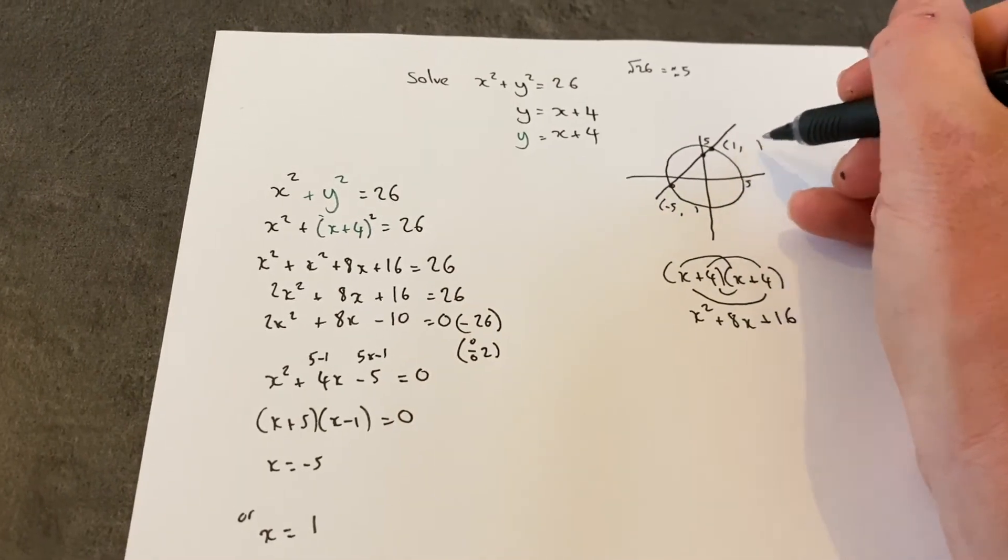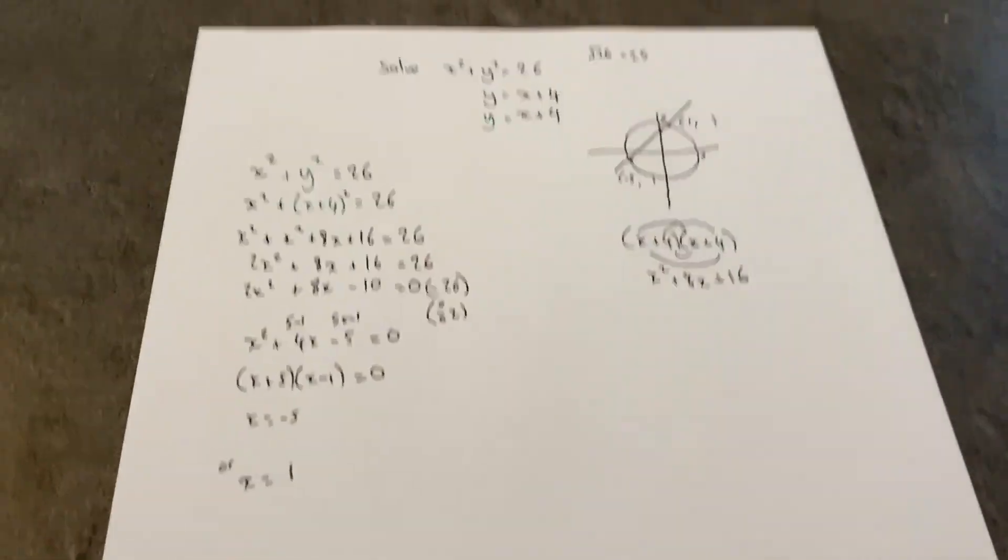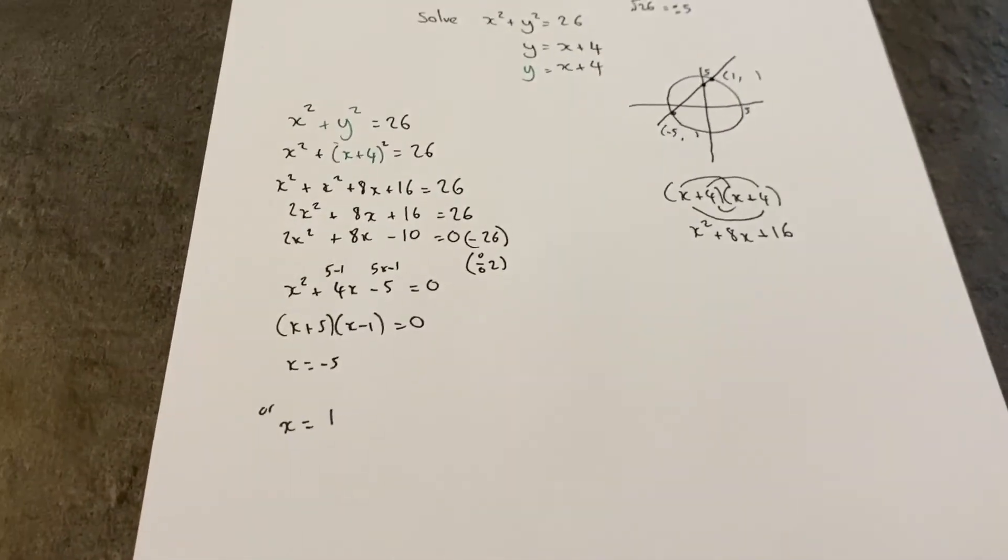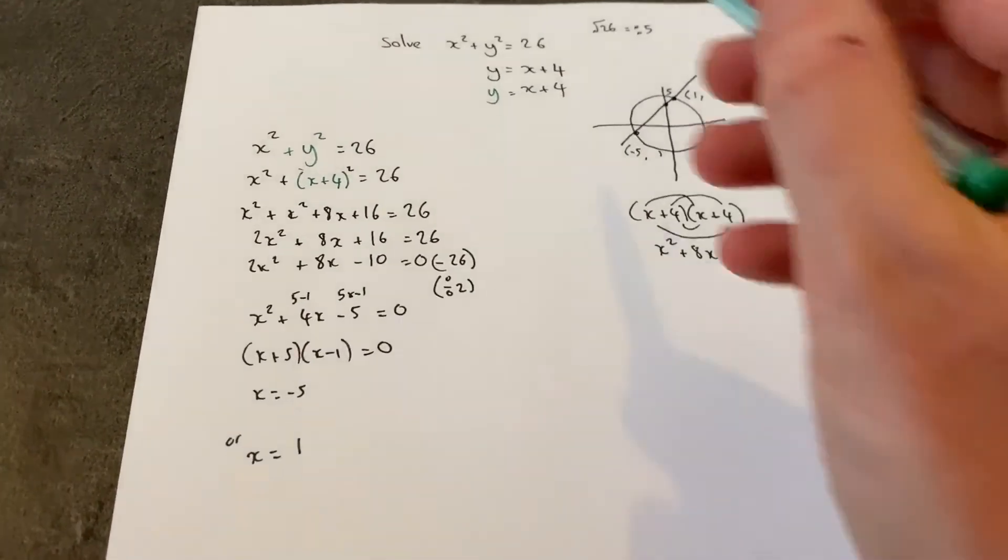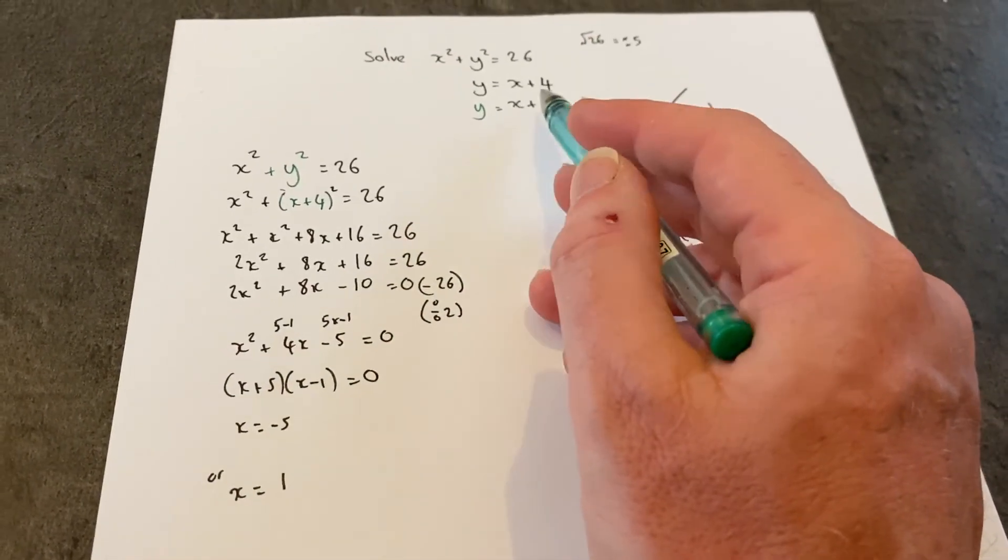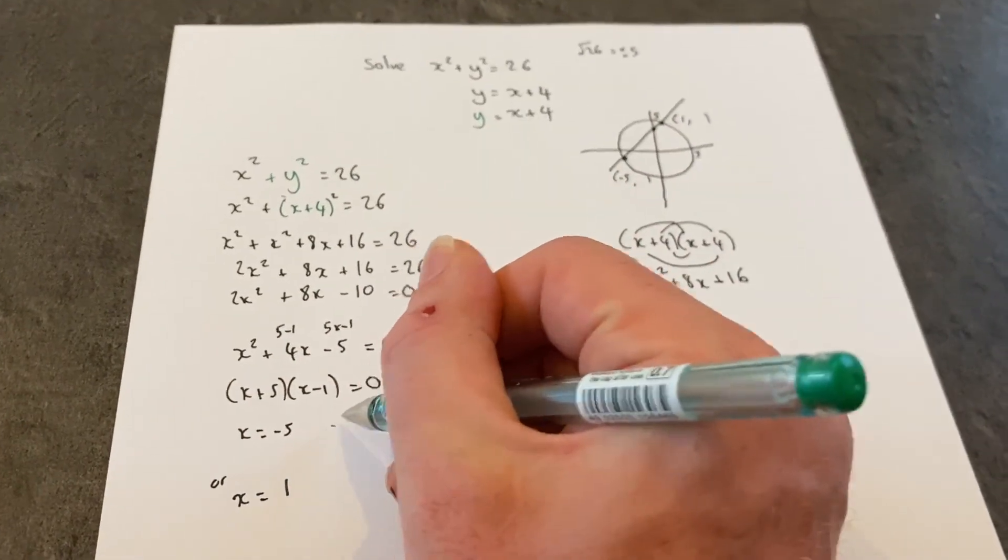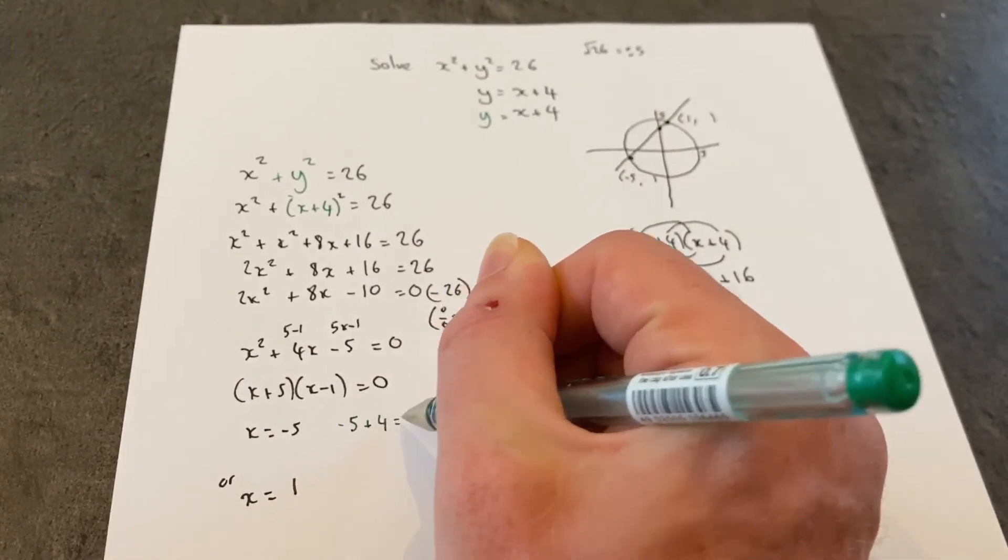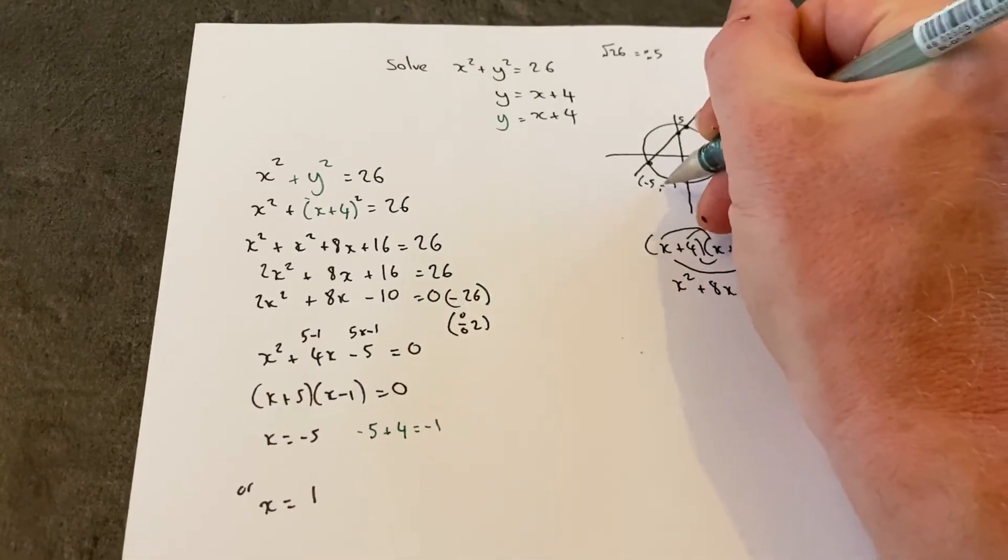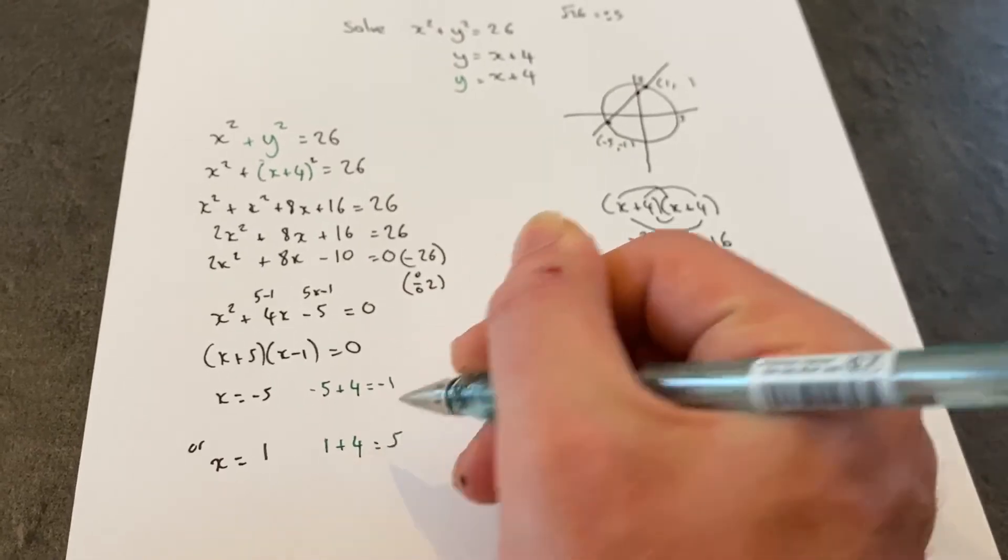To finish off the question, I've just got to find the two y coordinates. To do this, I revert back to the simplest equation possible, which was y equals x add 4. To find y, I just add 4 to the x value. When x is minus 5, minus 5 plus 4 is minus 1. When x is 1, 1 plus 4 equals 5.